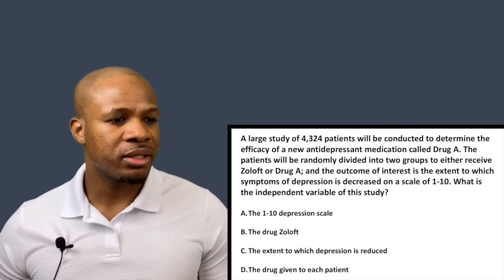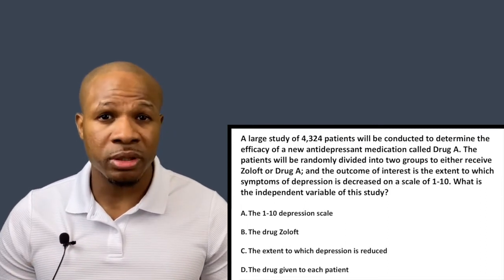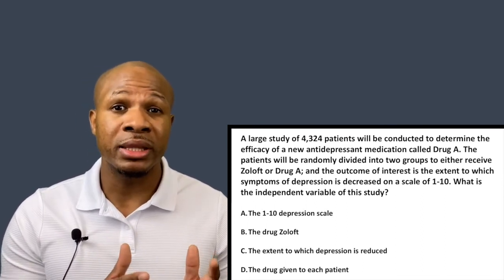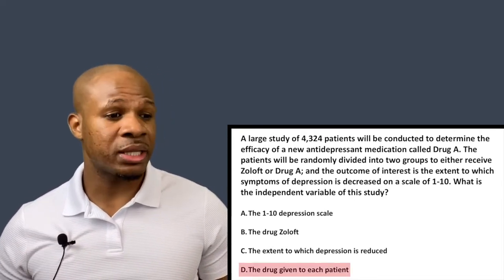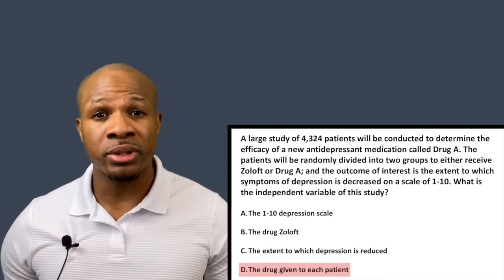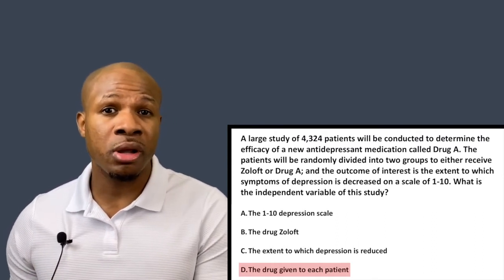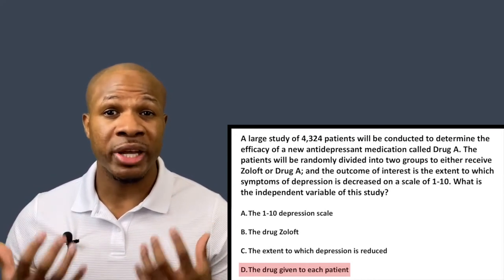Answer choice C says the extent to which depression is reduced — that is the output of the study, which would be the dependent variable, not the independent variable. Therefore the correct answer is D: the drug given to each patient. That is the input we get to control — we select which patients get Zoloft versus Drug A. That is our independent variable and the correct answer. Hopefully the distinction between independent and dependent variables is making more sense.